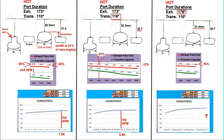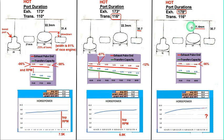I was able to achieve six percent overlap at 8000 RPM by raising the exhaust port from 22.3 millimeters above the port floor to 21.4 millimeters. The delivery ratio with this setup is 76% versus the original 69%.